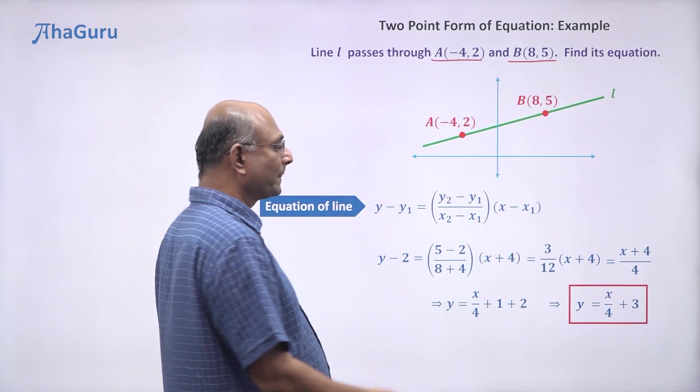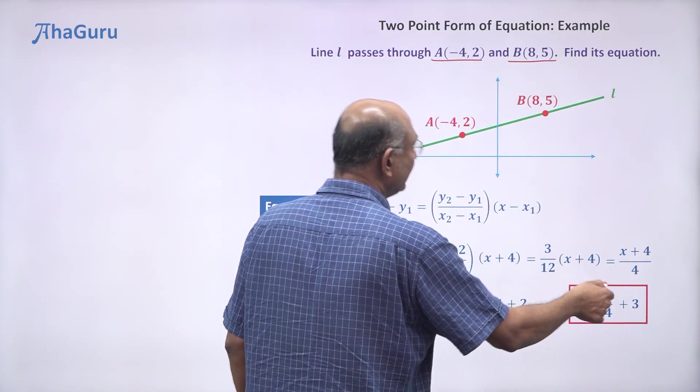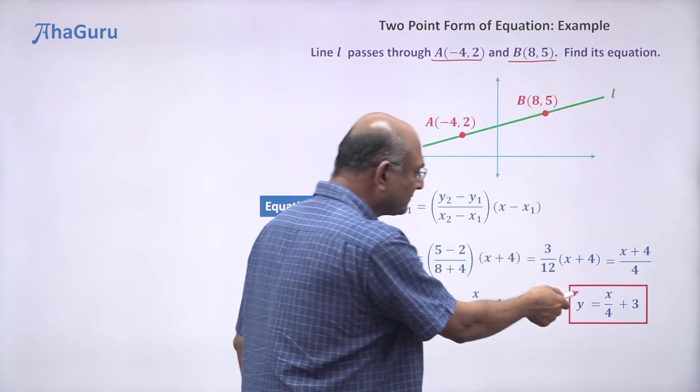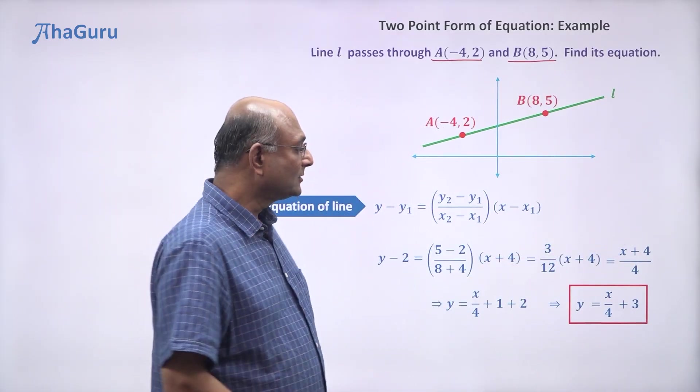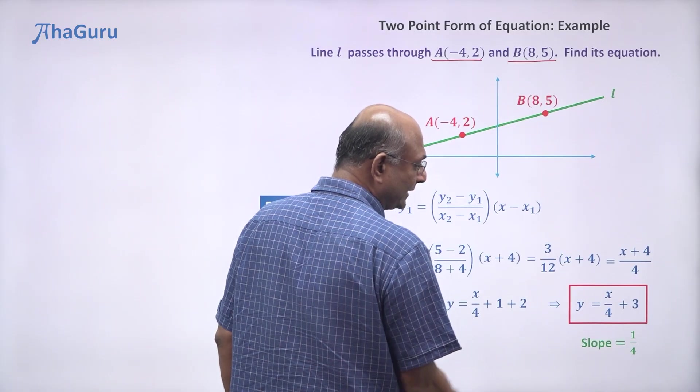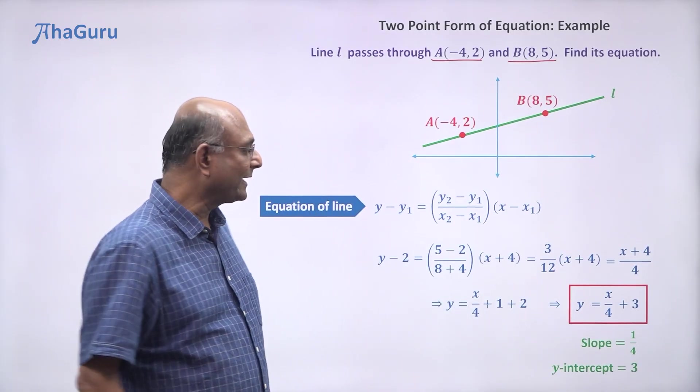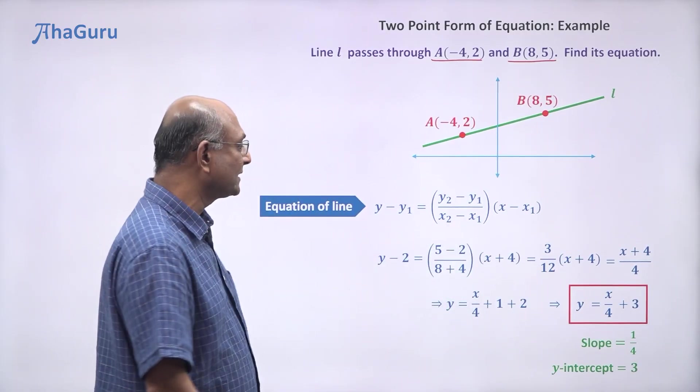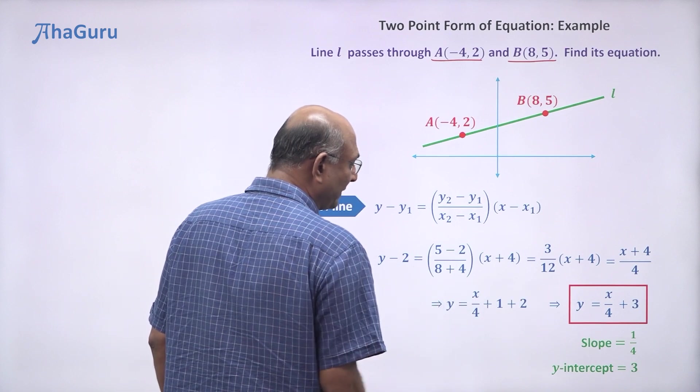Now this is the equation of this line, but this is also of the form y = mx + c. So what is the slope? 1/4. And what is the y-intercept? 3, right? We can read it off directly from this equation.